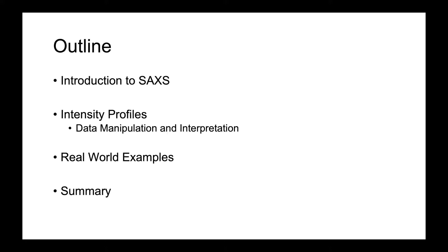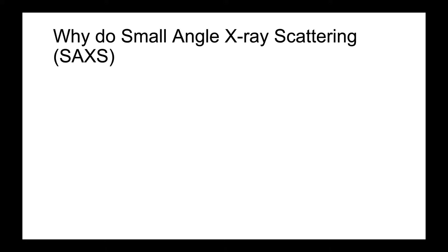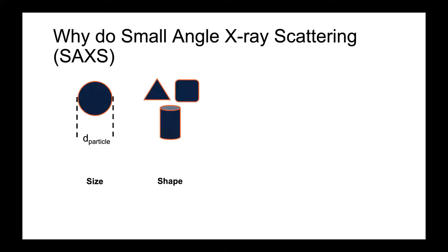As with any researcher, you might be wondering why somebody would want to do small angle x-ray scattering. There are some pretty solid reasons. First, this technique can help you understand the size of various different particles or different features of your sample. Say you have a nanoparticle in solution — you can use SAXS to understand the global average particle size for that sample.